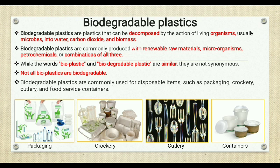Biodegradable plastics are also called bioplastics. These bioplastics can be used to make disposable products like packaging items such as bags and bottles, crockery such as dishes, plates, cups, and glasses, and cutleries like spoons and food service containers, as shown in the figures.